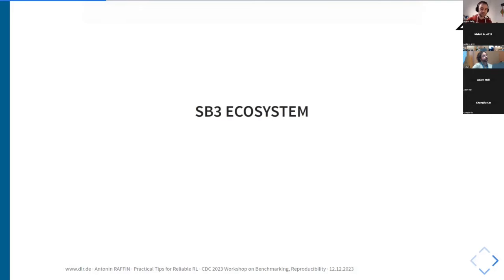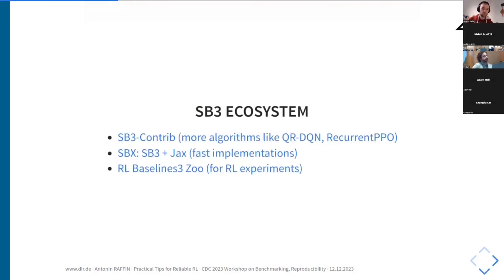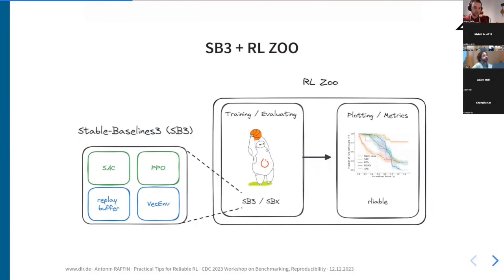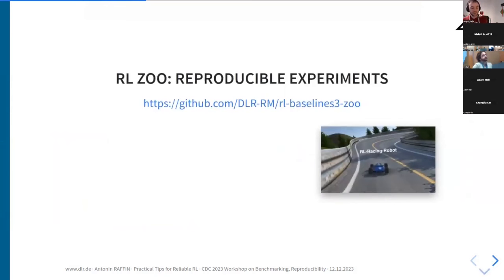SB3 doesn't come alone — it comes with three repositories. One provides more algorithms (SB3-contrib), one provides fast JAX implementations running 5 to 20 times faster than the PyTorch version (SBX), and then we have the RL Zoo, which handles everything about experiments. Stable Baselines 3 covers the basic components and algorithms; the Zoo is all about training, evaluating, plotting, additional metrics, and is the key component for reproducible experiments. We log everything needed to reproduce and compare different runs.